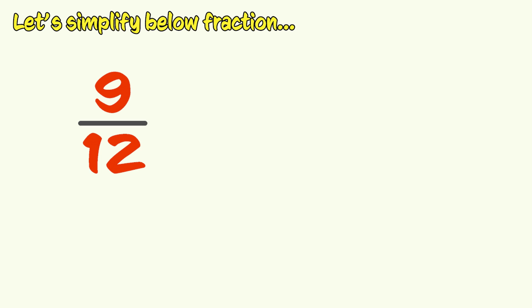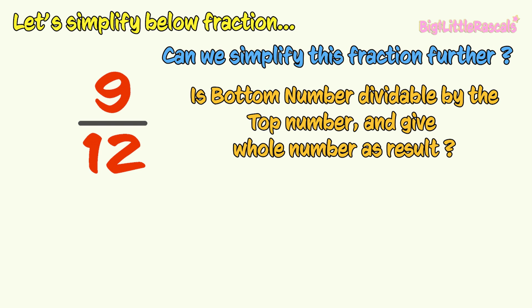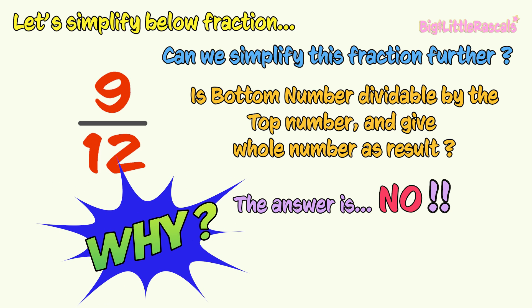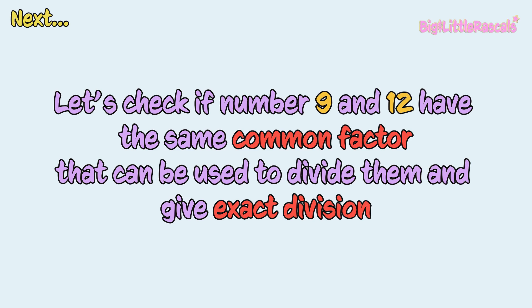Let's try another example. Nine-twelfths. Can this fraction be simplified further? First, please check, is the bottom number 12 dividable by the top number 9? Answer is no! Why? 9 is not the factor for 12. Then, let's check if number 9 and 12 have the same common factor that can be used to divide them and give us exact division as a result.